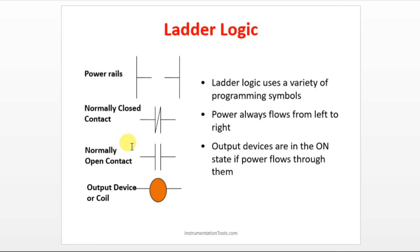What does normally open contact mean? Basically, it will not allow power to flow. If you disturb the state of the switch, it will allow power to flow — like in our home. Initially, the fan or the light will be in off condition only. If you turn on the switch, it will allow power to flow into the fan so that the fan is rotating.